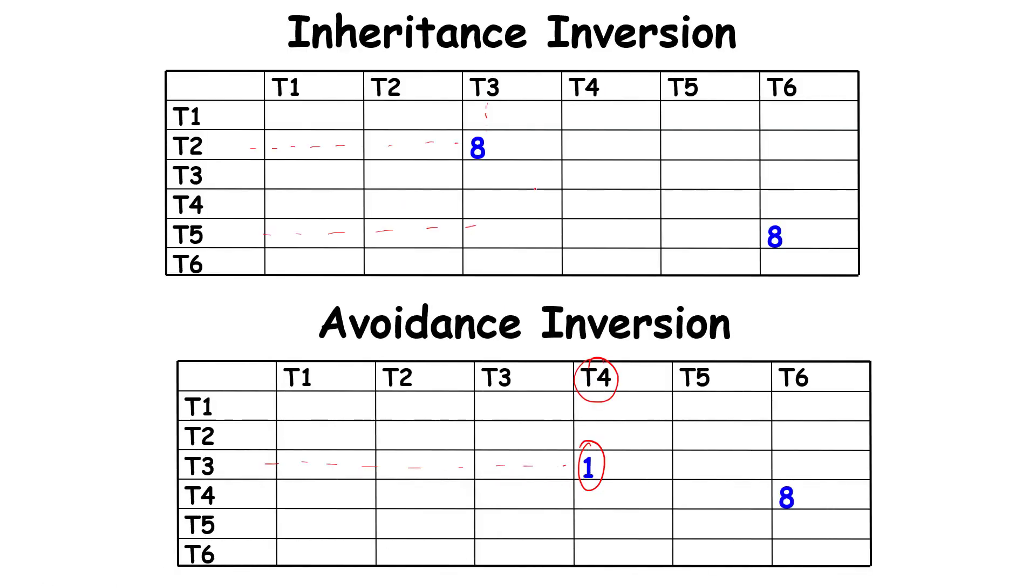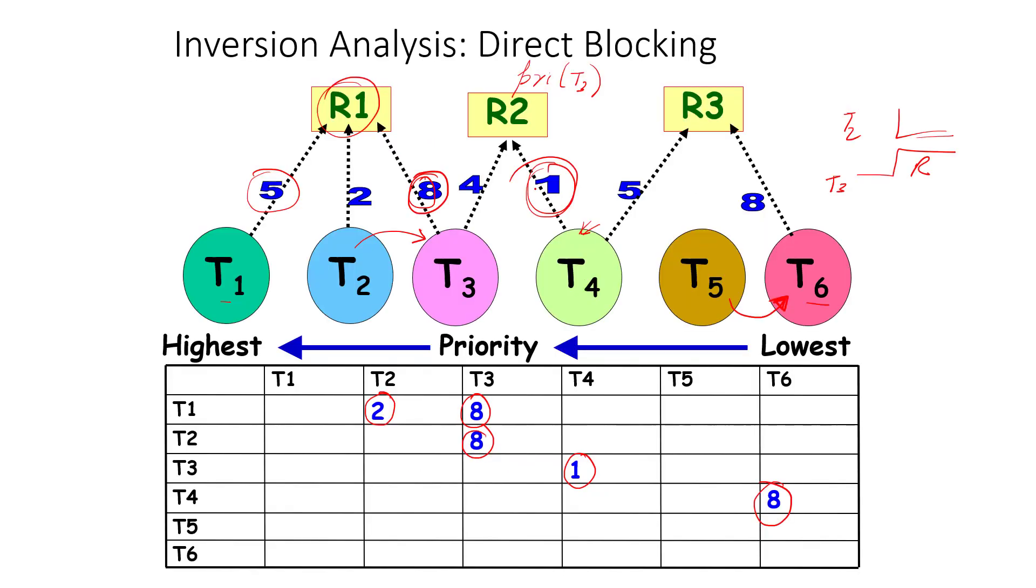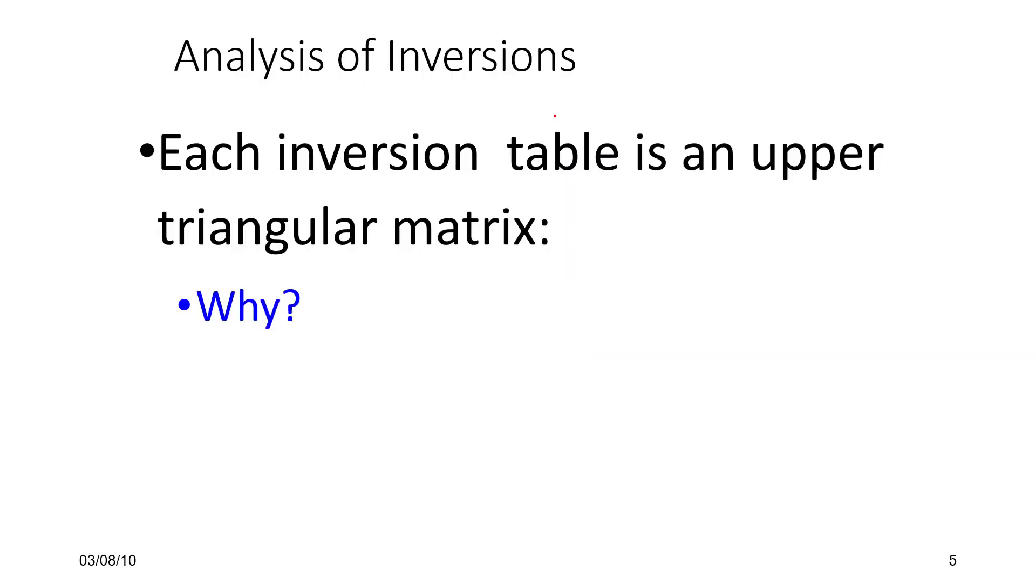Similarly, we can have one more where T4 waits on T6. Here the idea is quite similar: T6 acquires R3 whose ceiling is the priority of T4. T4 doesn't need R3, it actually needs R2, but will not get access to R2 even though R2 is free, primarily because it has not set the current system ceiling and it's not greater than the current system ceiling.